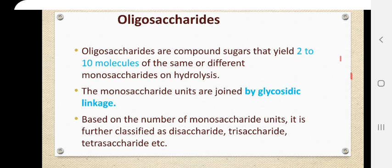Today we'll continue our discussion on oligosaccharides. Oligo means 'a few' and saccharide means 'sugar,' so oligosaccharide is a type of carbohydrate formed of few sugar units or few monosaccharide units. The number of monosaccharide units that form an oligosaccharide can range from 2 to 10 molecules.